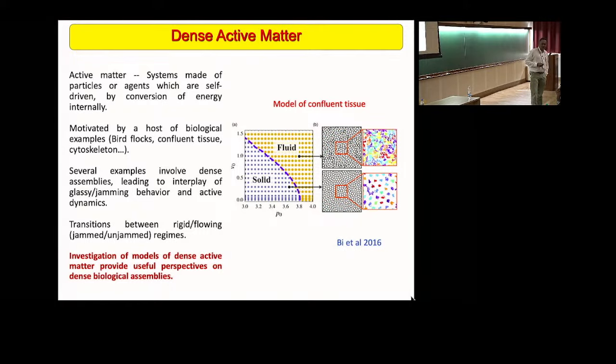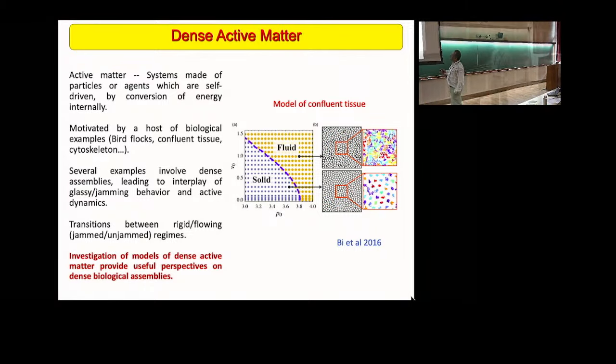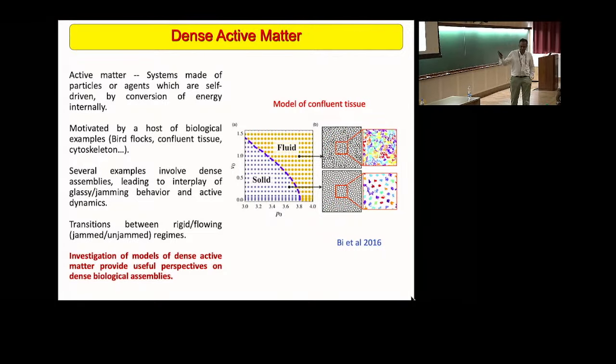This audience doesn't need me to go through any of these points, but just to get going and place the work I'm going to present in context, let me say a few things. Active matter has been studied intensely over the last decade. Among the motivations to do this is that it seems to be a good description of a variety of biological systems across different length scales. Several of these examples involve dense assemblies of matter, leading to an interesting interplay between glassy or jamming physics and that of active dynamics.